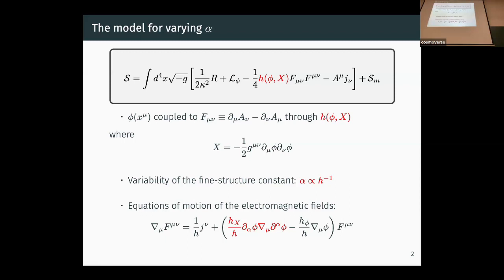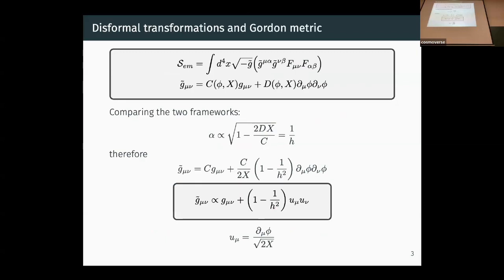If you vary the action with respect to the four potential A_mu, you can find the equations of motion of the electromagnetic fields, where you can see the first term within the brackets is specific to the dependence on the kinetic term. These field equations can also be derived in a scalar-tensor theory, where in the Einstein frame, radiation follows the null geodesics of a different metric g-tilde, which relates to the gravitational metric through a disformal transformation. If you compare the two frameworks, you can find the correlation between the gauge-kinetic function and the disformal factor of the transformation.